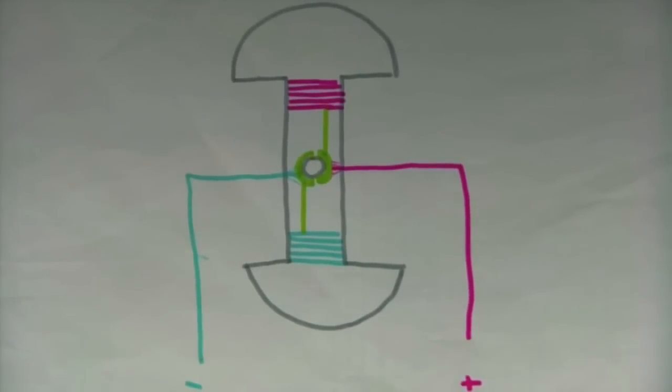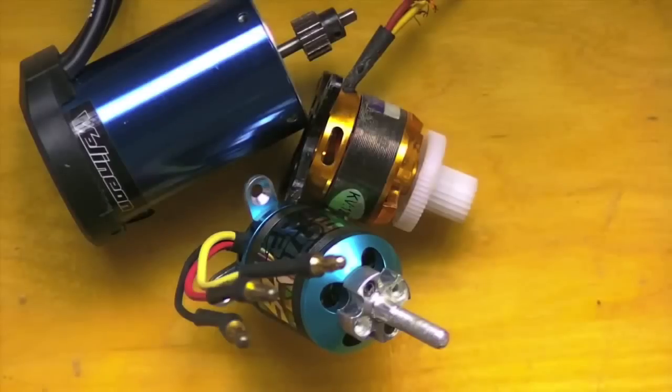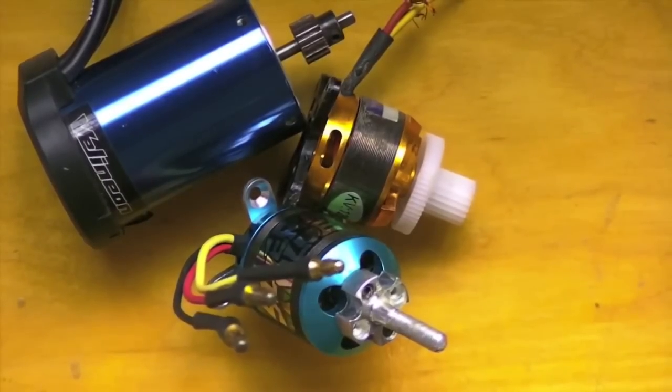The brushes are the most vulnerable to wear and tear and also cause inefficiency. Brushless motors, on the other hand, work in a completely different way.